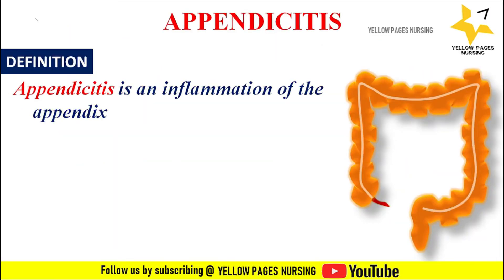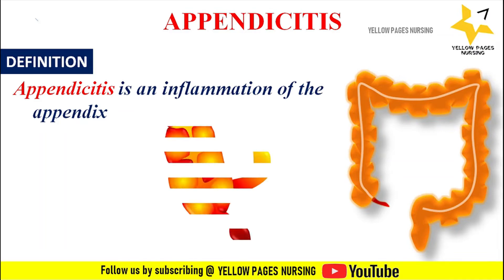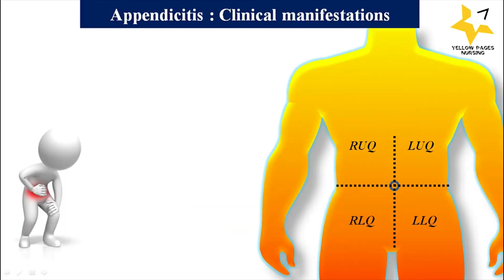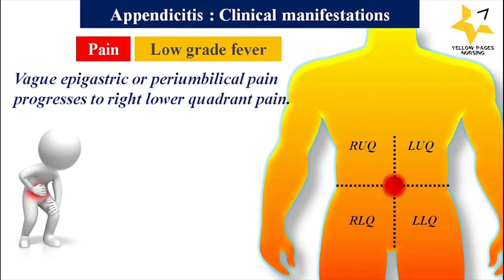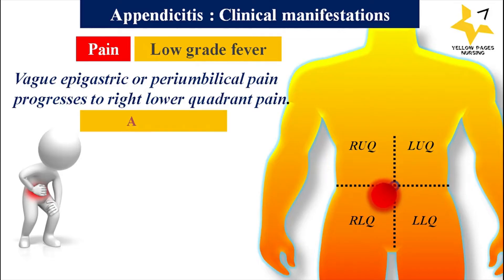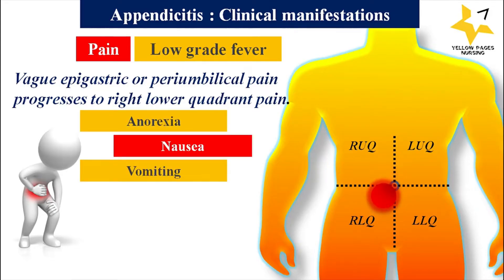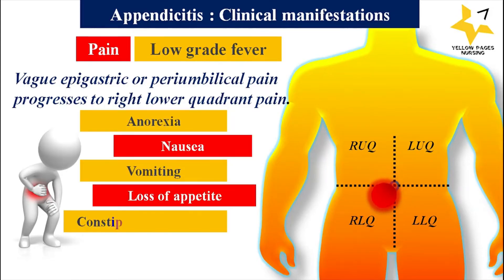Clinical manifestations of appendicitis include pain with low-grade fever. Epigastric or periumbilical pain progresses to right lower quadrant pain. The pain may feel like a cramp at first and may get worse when you cough, sneeze, or move. Other symptoms include anorexia, nausea, vomiting, and loss of appetite.